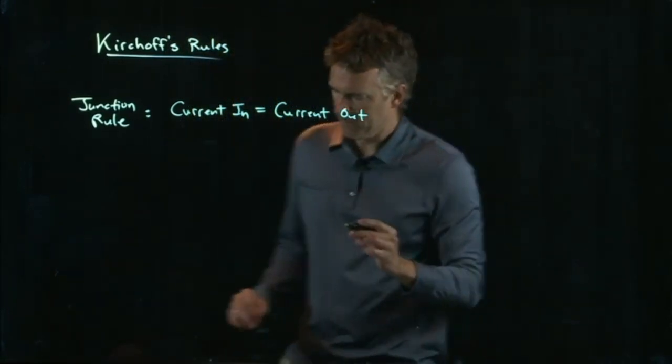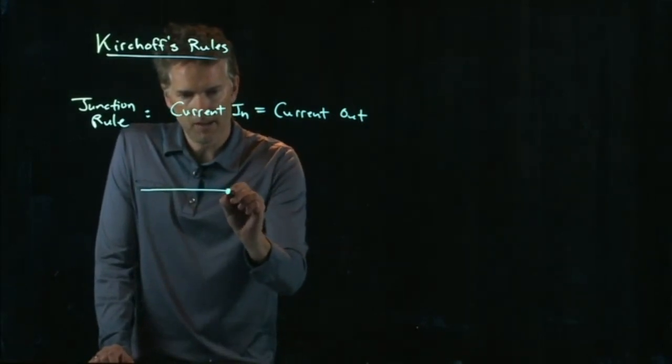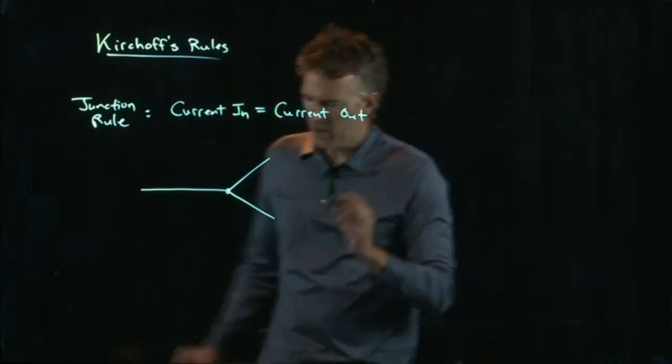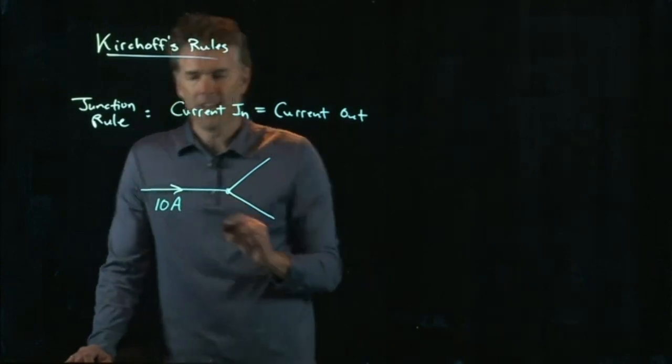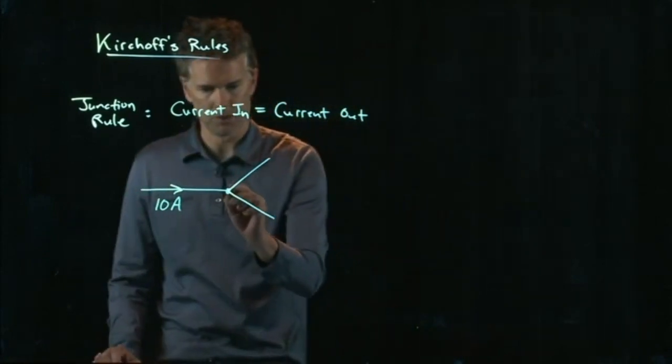Okay, what does that mean? That means if I have a wire and it suddenly splits into two wires, whatever current is coming in here, let's say it's 10 amps, it has to go somewhere out of the junction.